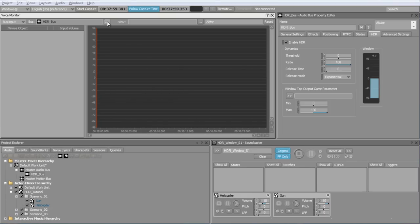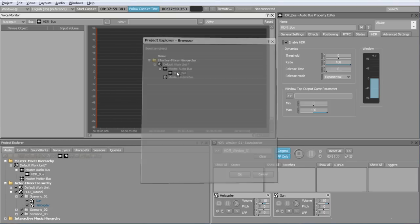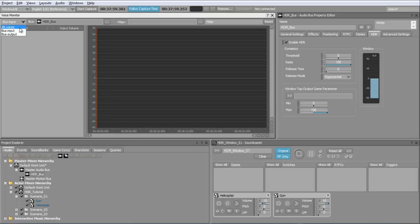In the Voice Monitor view, select the HDR bus that you want to monitor and use the drop-down menu to toggle between Input or Output of the HDR bus. Finally, to monitor activity in the Voice Monitor view, you need to start a capture.